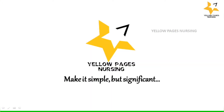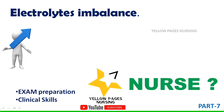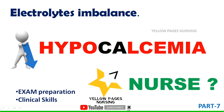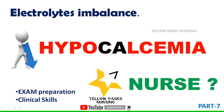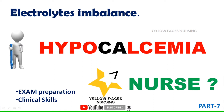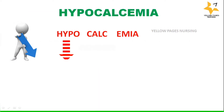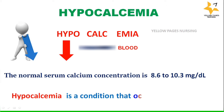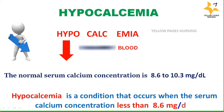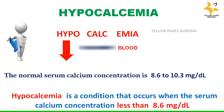Welcome to Yellow Pages Nursing. Today's video is about hypocalcemia under electrolyte imbalance. The normal calcium level in the blood is between 8.6 to 10.3 milligram per deciliter. Hypocalcemia is a condition that occurs when the serum calcium level drops below 8.6 milligram per deciliter.